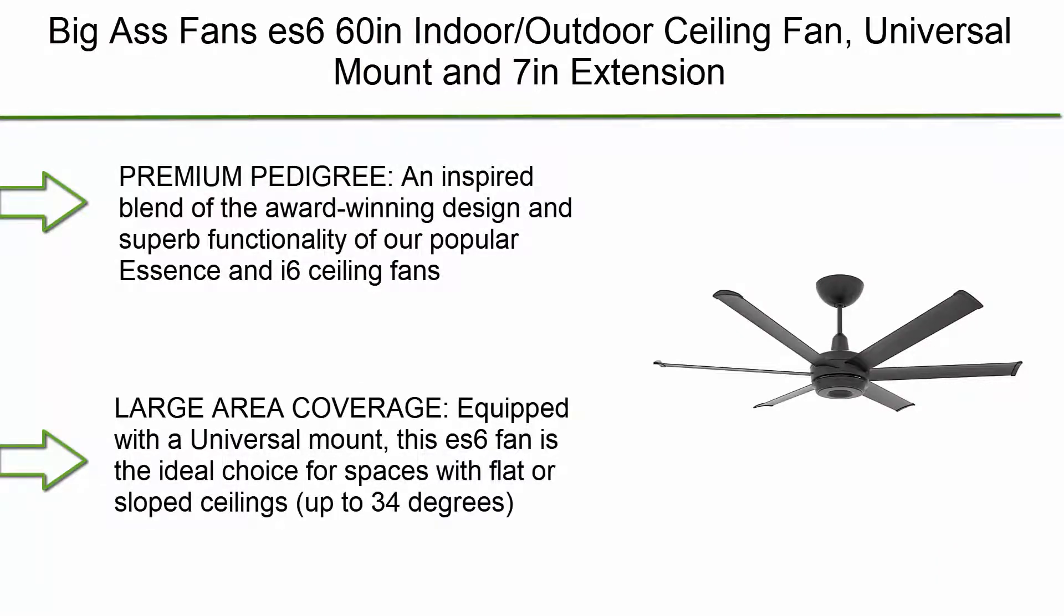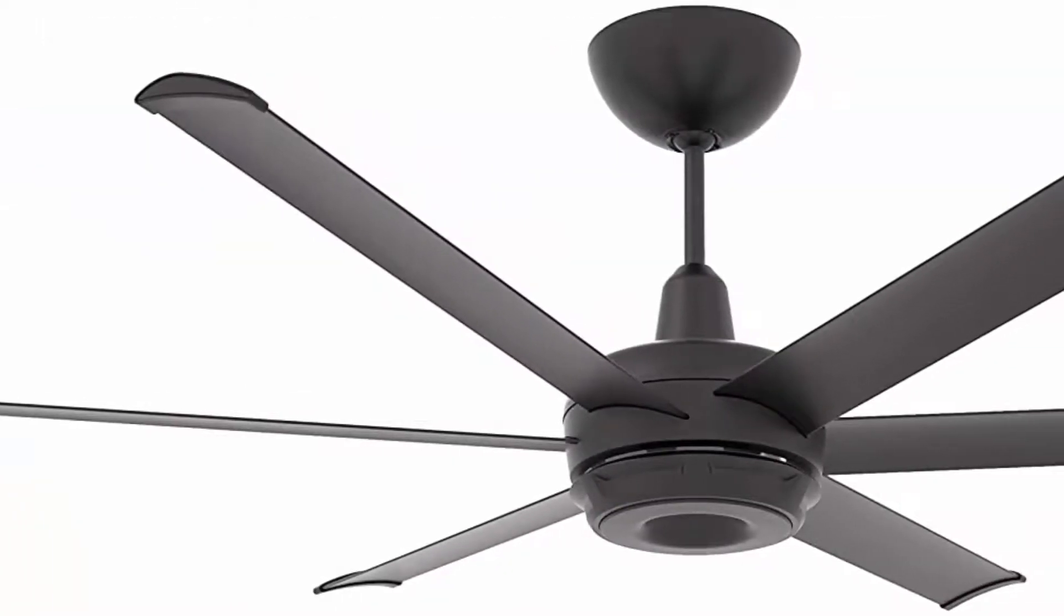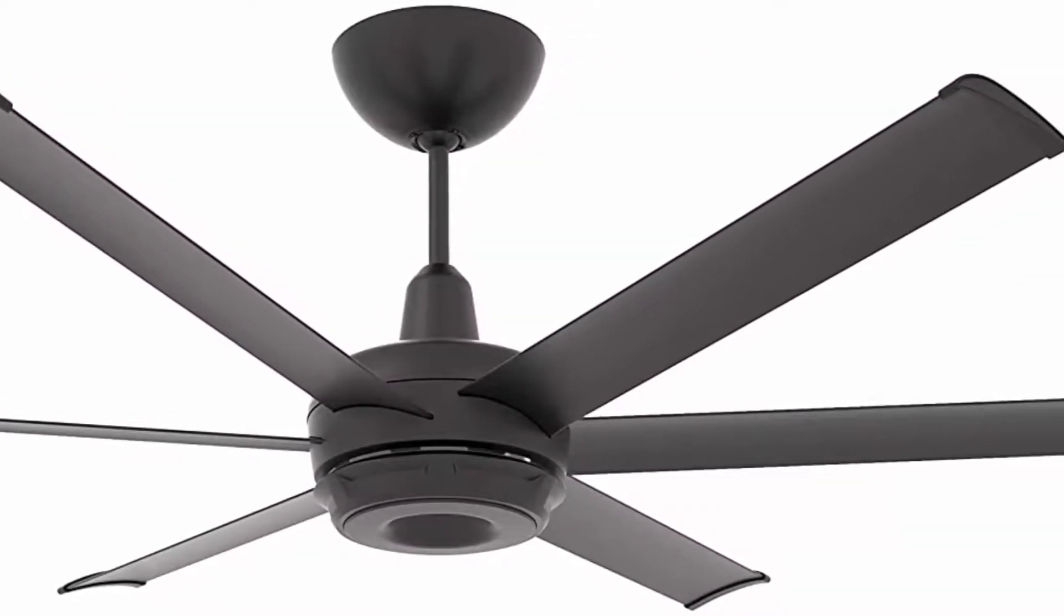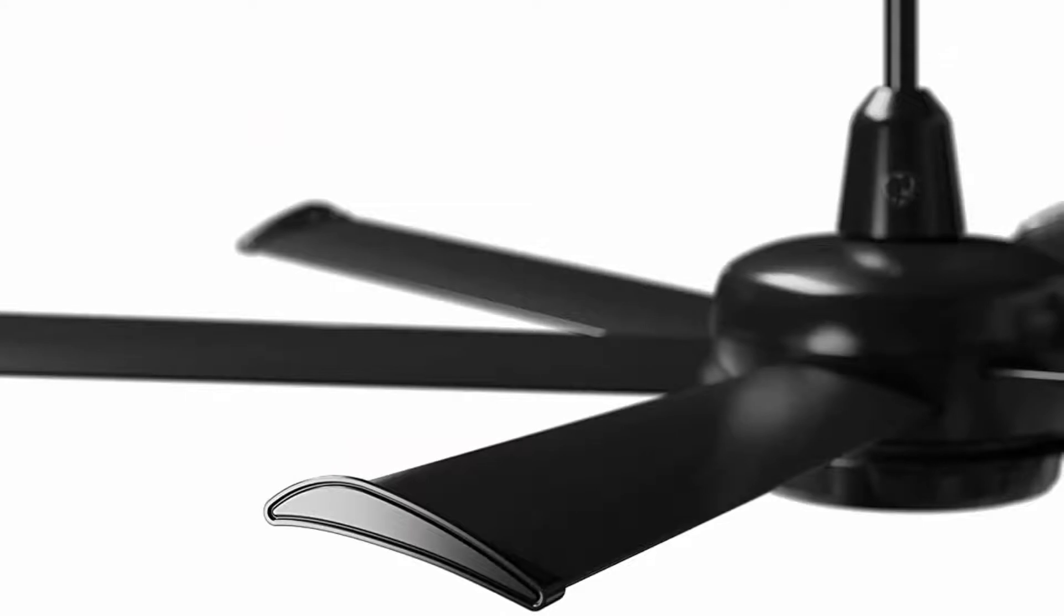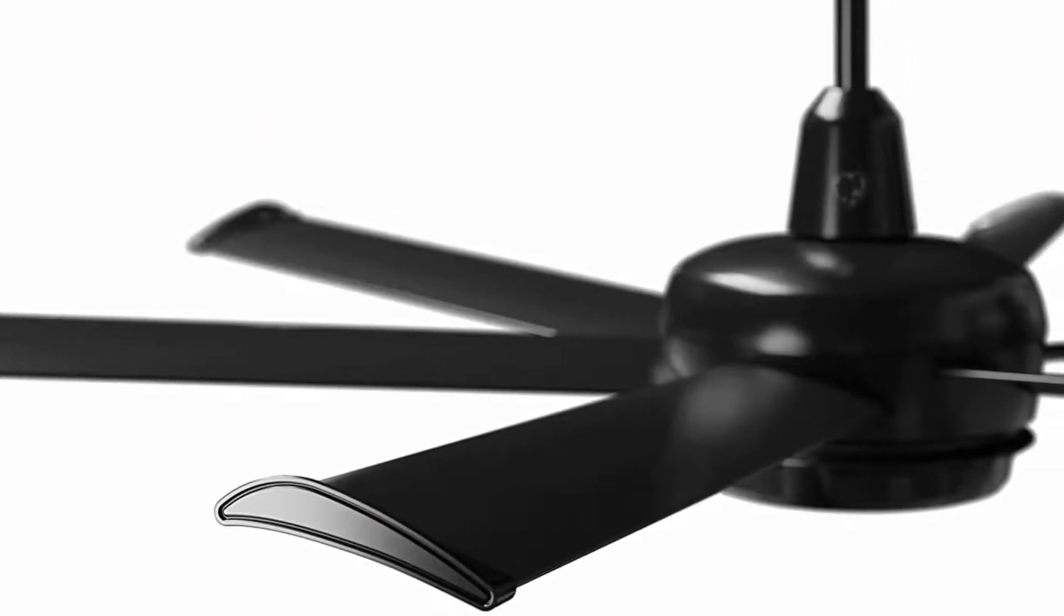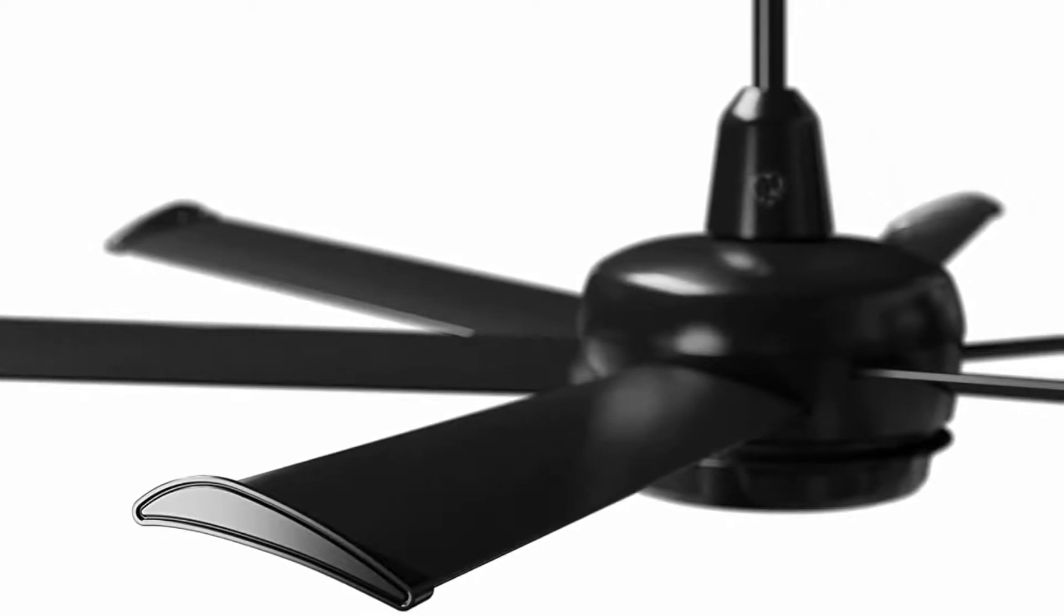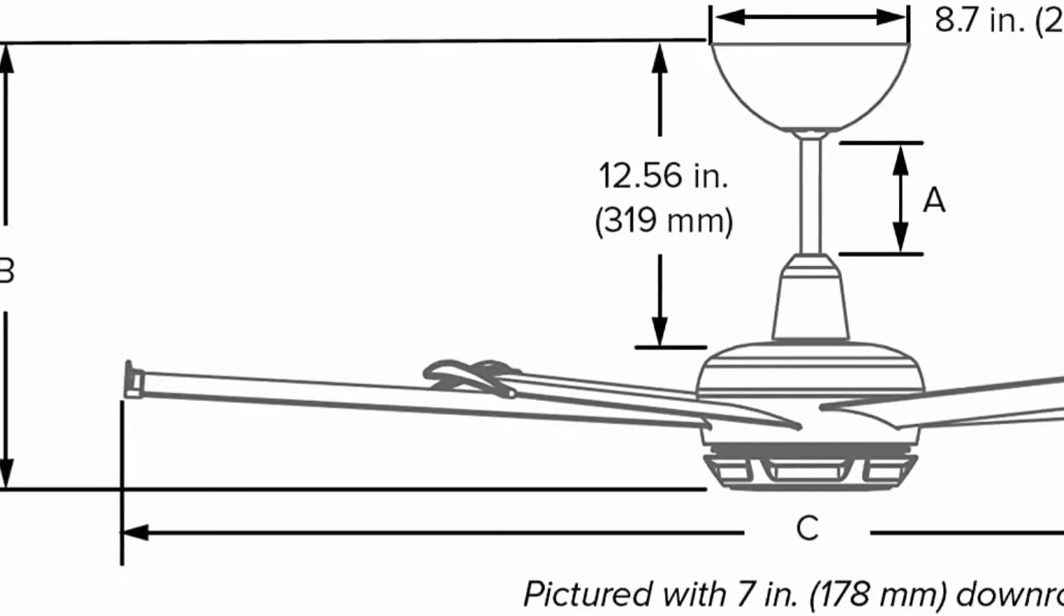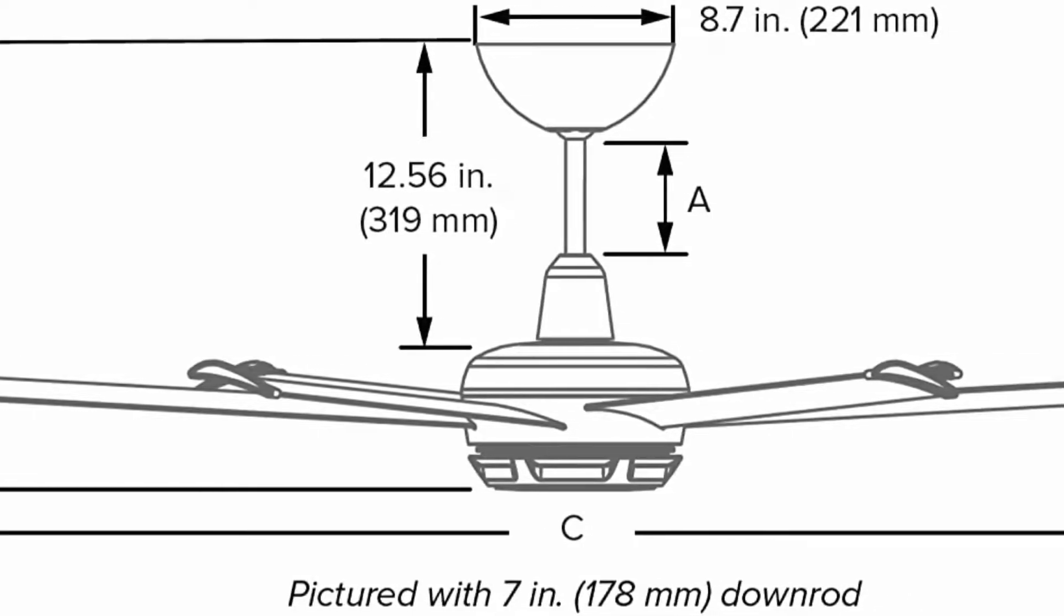Top 5. Big Ass Fans ES6 60 inches indoor-outdoor ceiling fan, universal mount and 7 inches extension, Bluetooth remote, compatible with Alexa and Google Assistant for voice control, black. Premium pedigree. An inspired blend of the award-winning design and superb functionality of our popular Essence and i6 ceiling fans. ES6 lets you experience what Big Ass Fans groundbreaking engineering and cutting-edge technology can do in more spaces, indoors and out, than ever before. Large area coverage. Equipped with a universal mount, this ES6 fan is the ideal choice for spaces with flat or sloped ceilings up to 34 degrees. 60-inch blade diameter can move enough air to keep rooms up to 20 feet by 20 feet comfortable all year long. Included 7-inch downrod for ceilings 9 feet to 11 feet high.